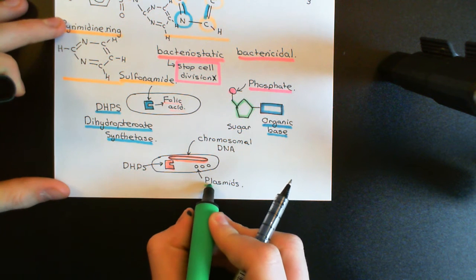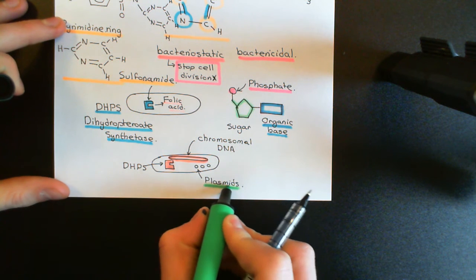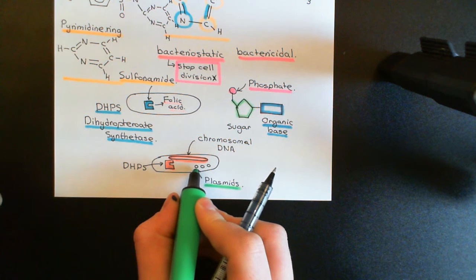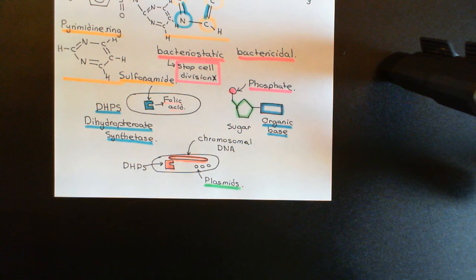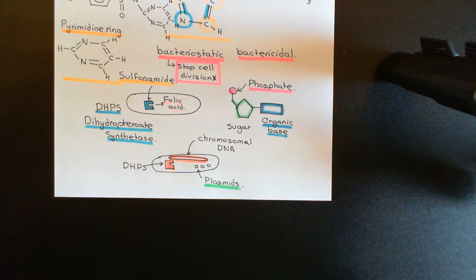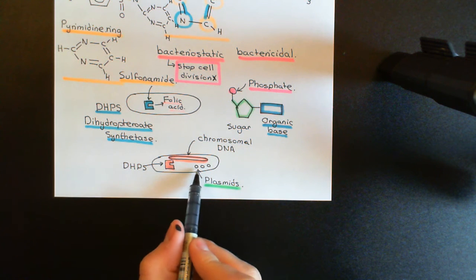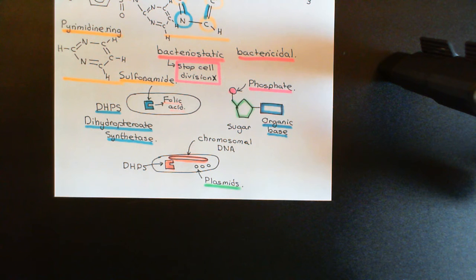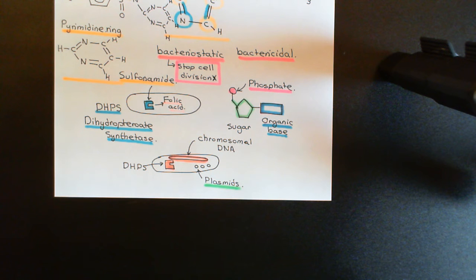The new form of the dihydropteroate synthase enzyme, which is no longer affected by the sulfonamide antibiotics, is encoded by a gene in a plasmid. Originally, in the bacterial population long before the use of sulfonamide antibiotics — back in the 19th century — if we looked at all the different bacterial species that infect humans, the presence of this plasmid containing this new form of dihydropteroate synthase would have been very rare. Very few bacterial cells would have actually had this plasmid.